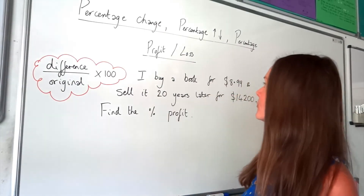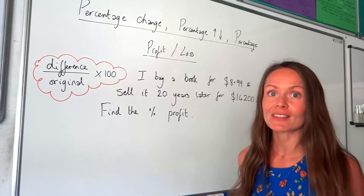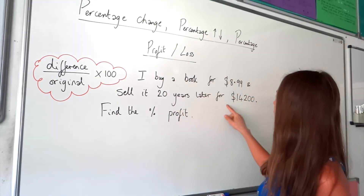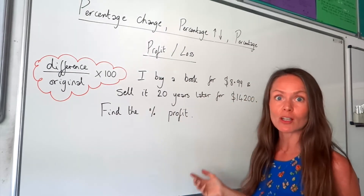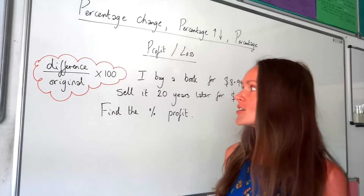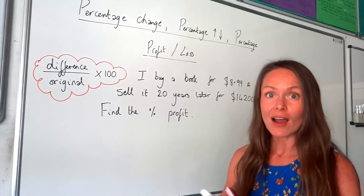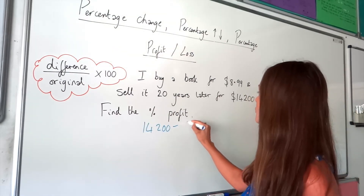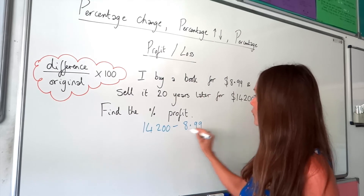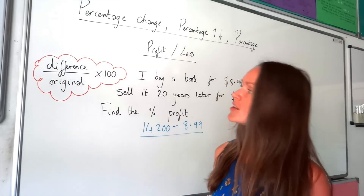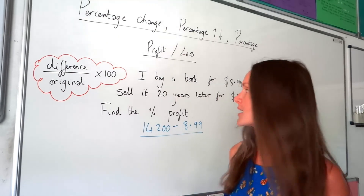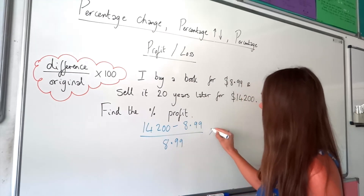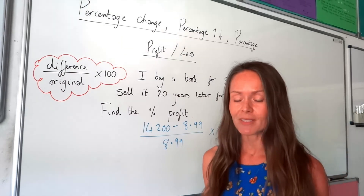So in this last example, I buy a book for $8.99, and then 20 years later I realise it's a first edition and I sell it for $14,200. Find the percentage profit. So just like previously, find the difference between the two values — take the larger one minus the smaller one — not forgetting to divide by the original value, so the value I bought the book at in the first place, $8.99. And then finally multiply that by 100 to turn it into a percentage.